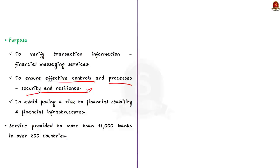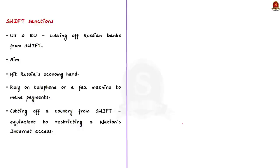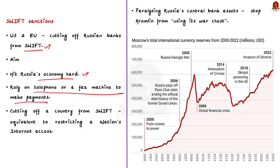What does SWIFT sanction mean? The United States and the European Union are cutting off a number of Russian banks from the main international payment gateway, which is SWIFT — this is known as SWIFT sanctions. Excluding Russian banks from the SWIFT platform is expected to hit Russia's economy hard, and will make the country rely on telephone or fax machines to make payments. Cutting off a country from SWIFT in the financial world is equivalent to restricting a nation's internet access.